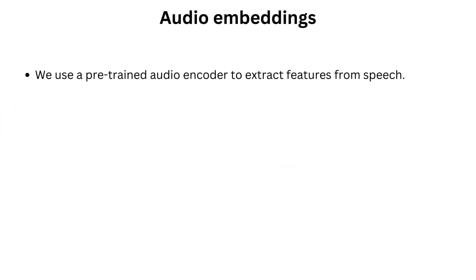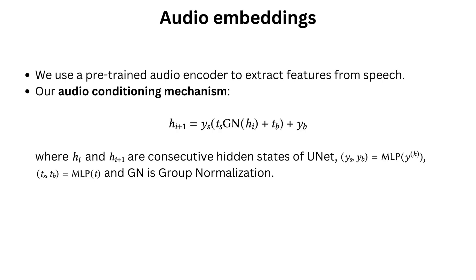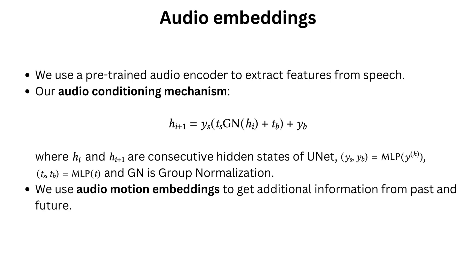Audio embeddings are extracted by a pre-trained audio encoder. We condition the model on the embeddings using an extended version of time conditioning known from diffusion models. We add additional audio scale and shift components computed using a simple neural network. Additionally, we introduce audio motion embeddings, serving a similar role to the motion frames, which we use to provide extra information from the past and future.